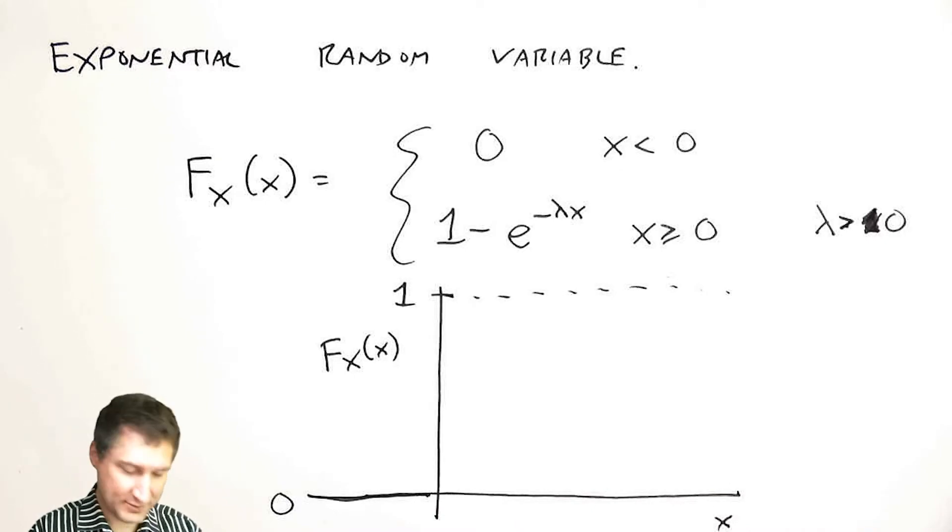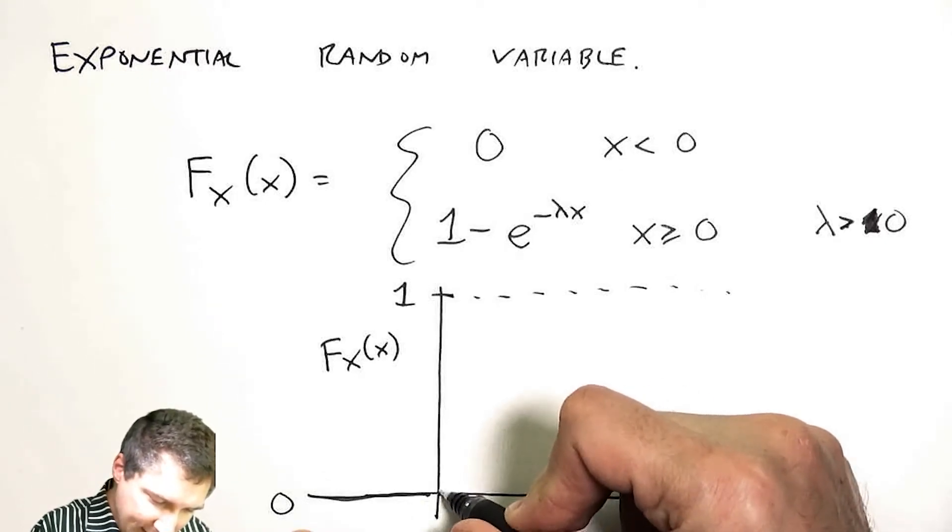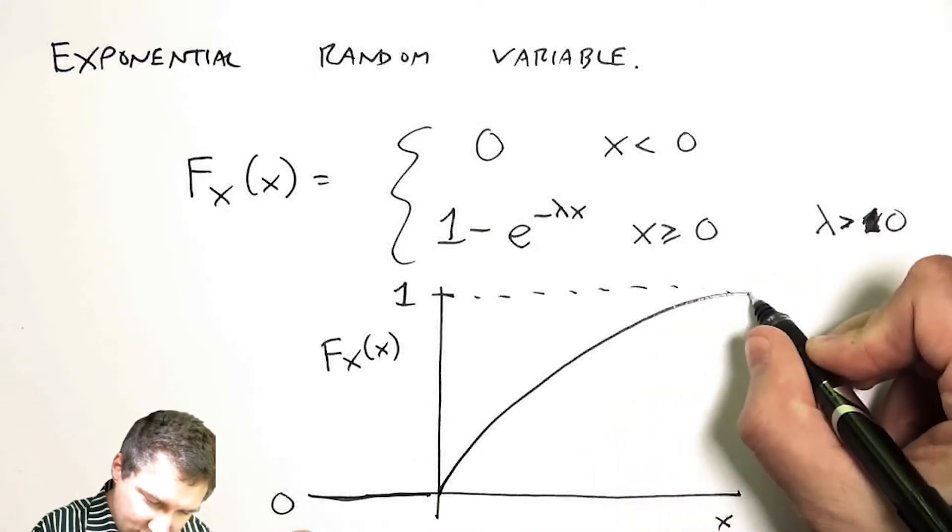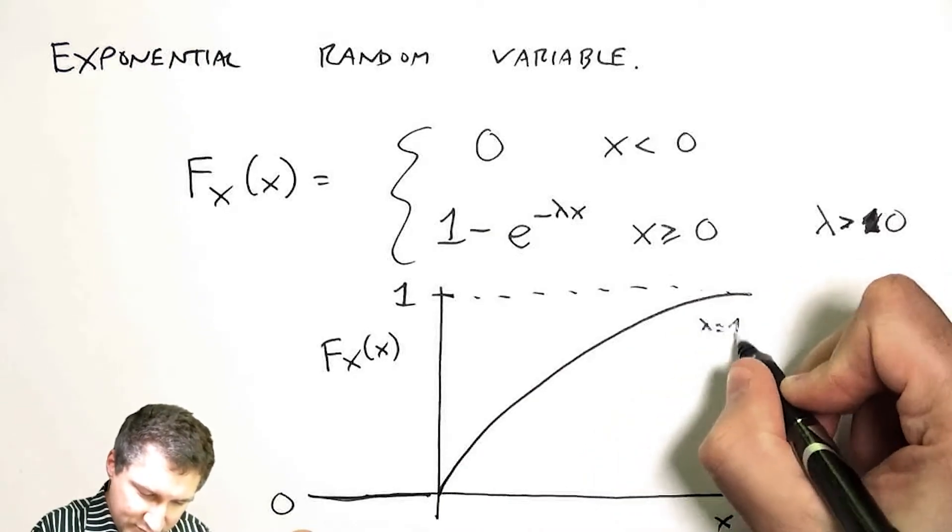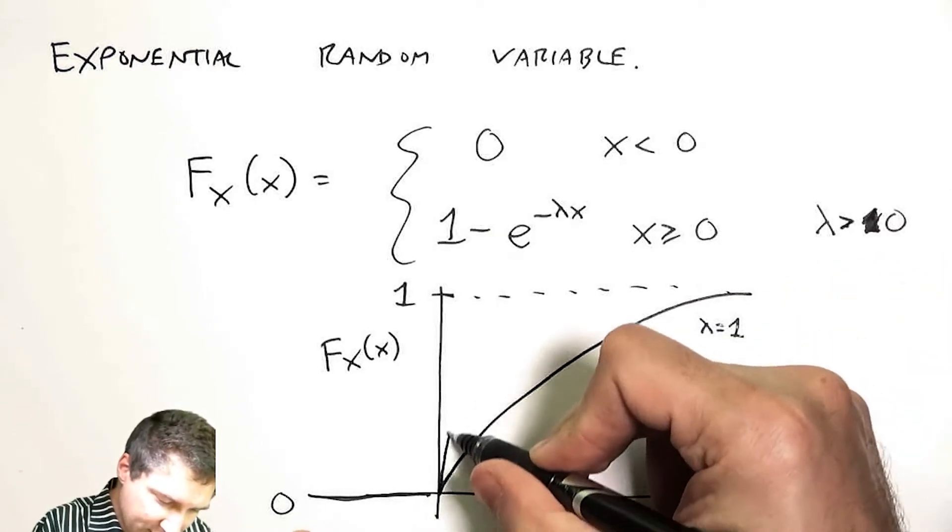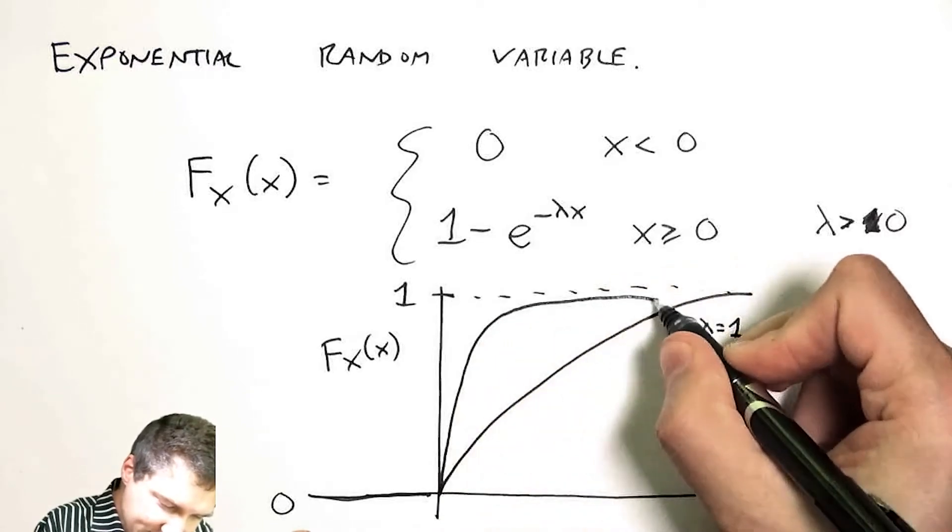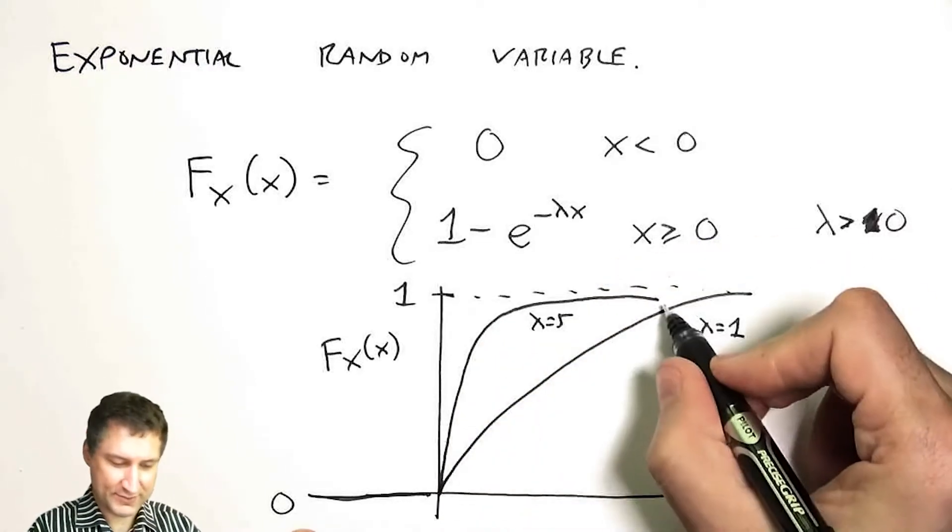How quickly I get there depends on the value of lambda. When lambda is smaller I get up there more slowly, say for example this is like lambda equals one. For a bigger value of lambda like lambda equals five, I may get there faster.